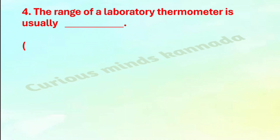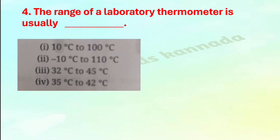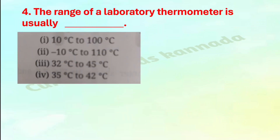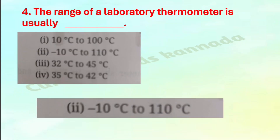Fourth question: The range of a laboratory thermometer is usually — option one: 10°C to 100°C, option two: minus 10°C to 110°C, option three: 32°C to 45°C, option four: 35°C to 42°C. The correct answer is option two: minus 10 degree Celsius to 110 degree Celsius.